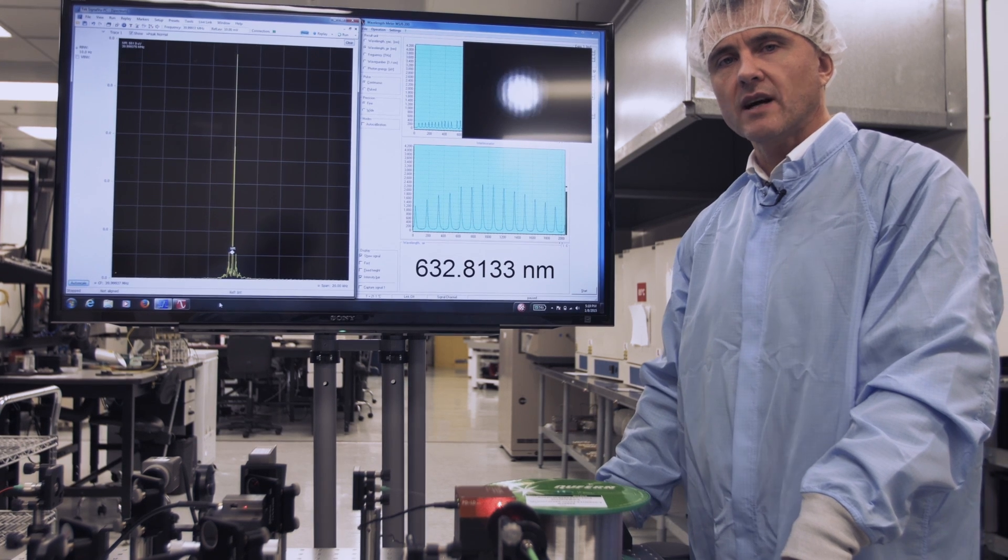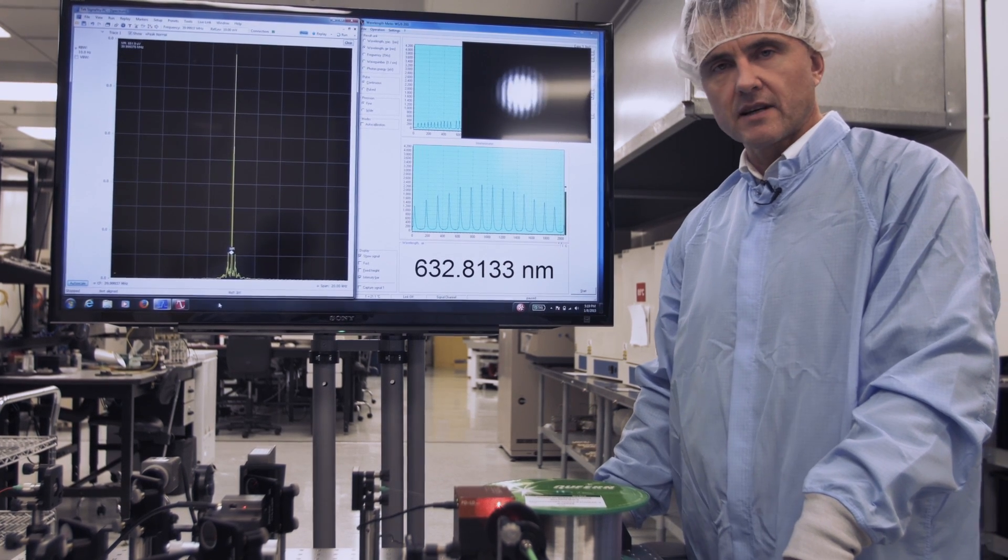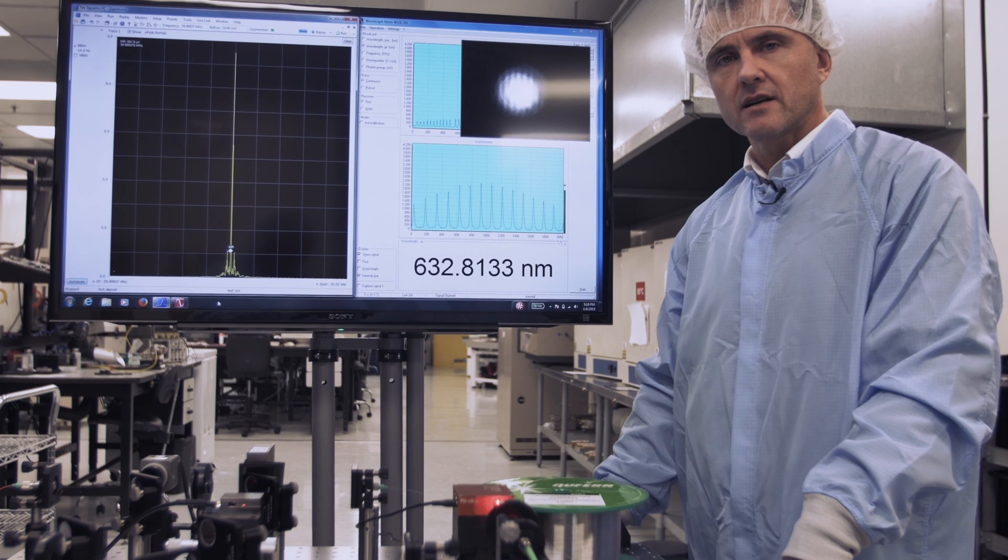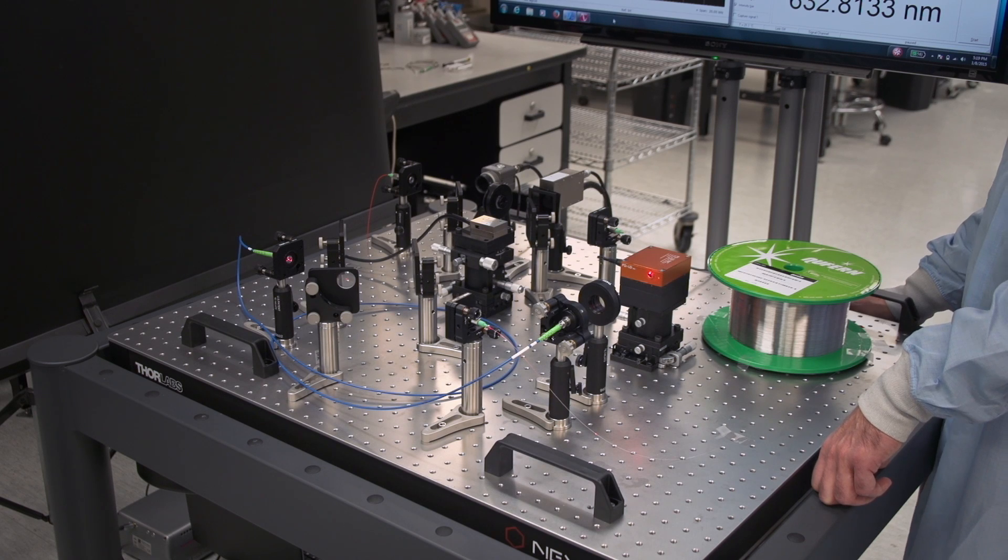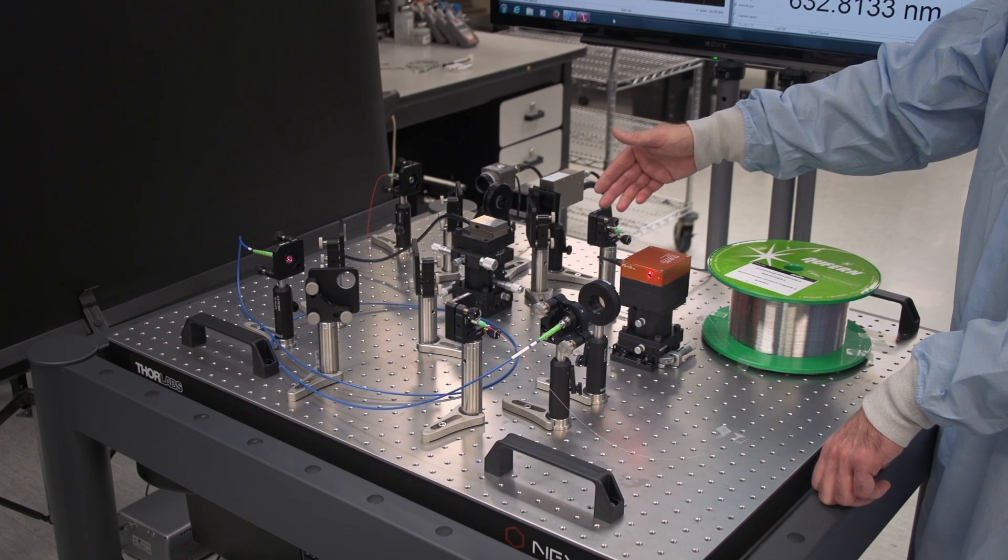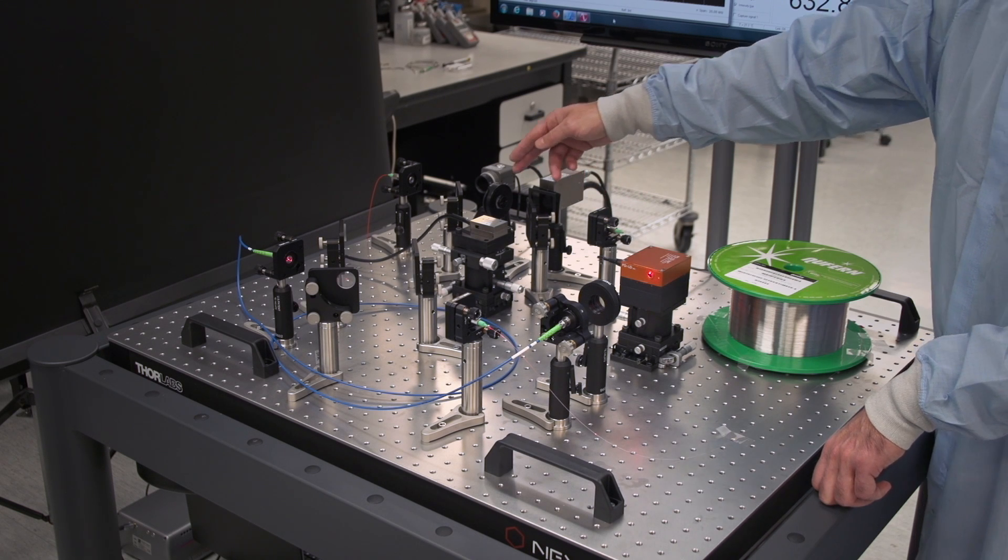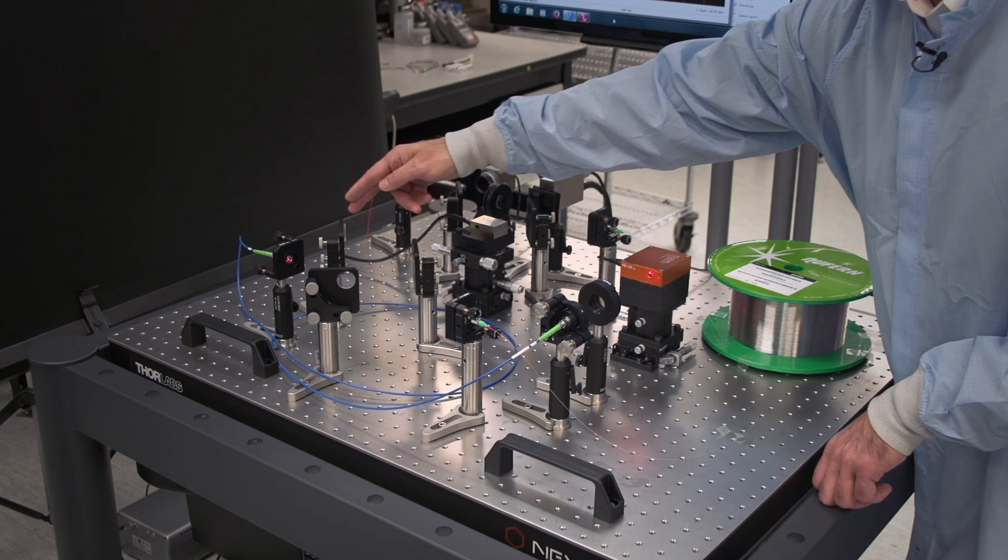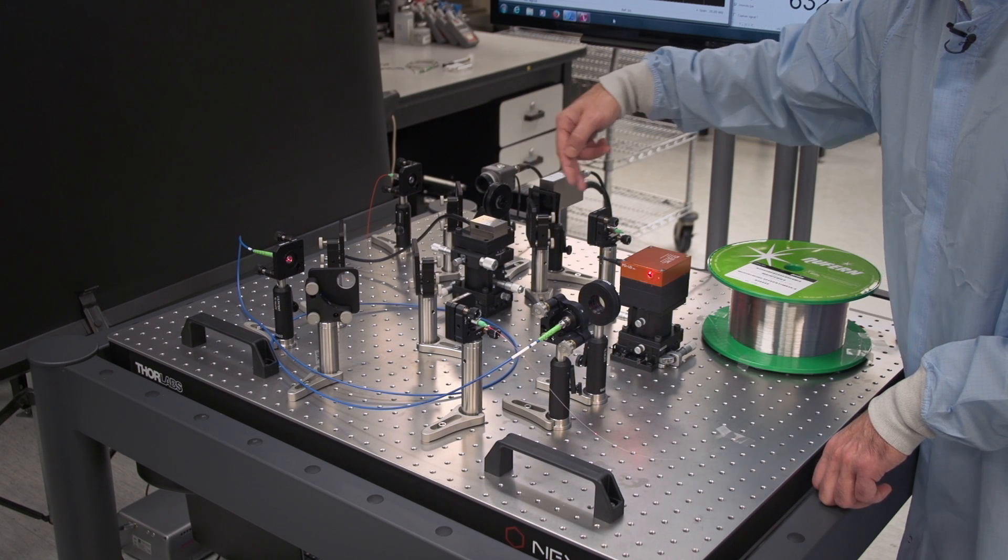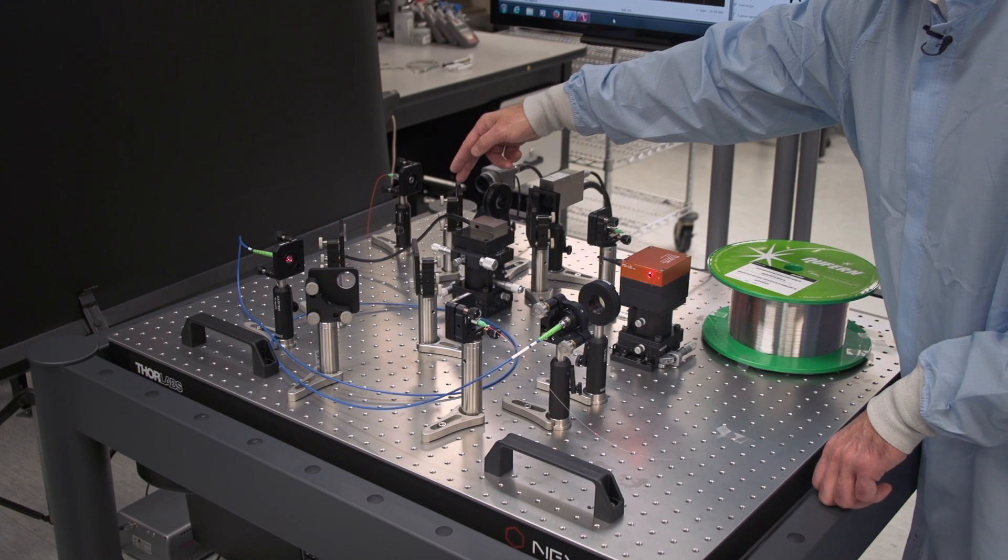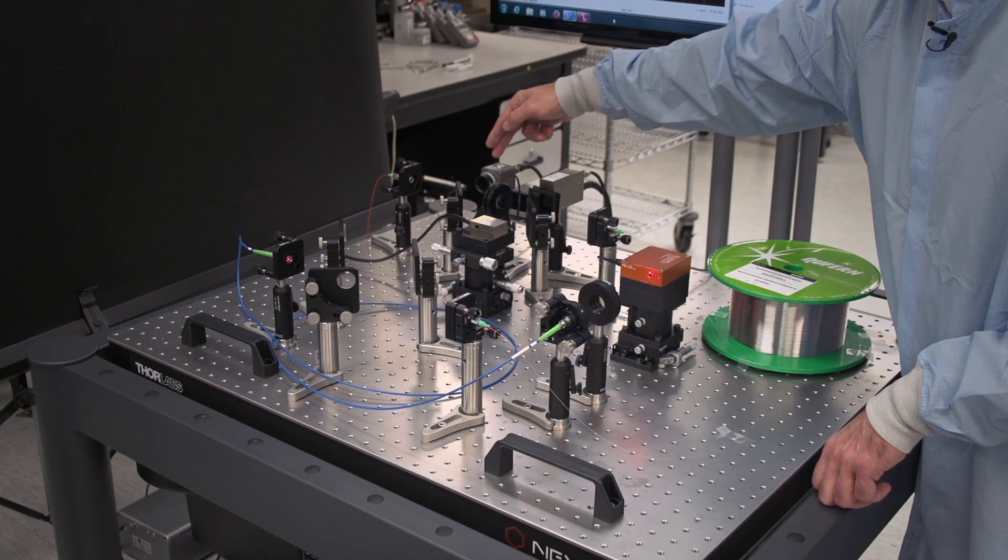A laser with such narrow line width has a coherence length of several kilometers, which is directly proven here by interfering the output of the fiber with a portion of the beam that is split off here, and is then recombined with the light passing through the fiber after this beam splitter on this camera.